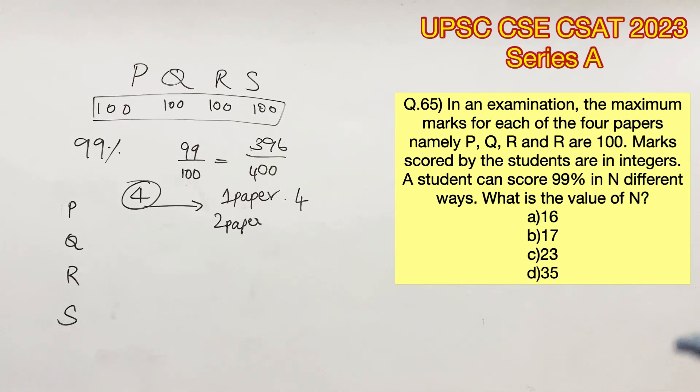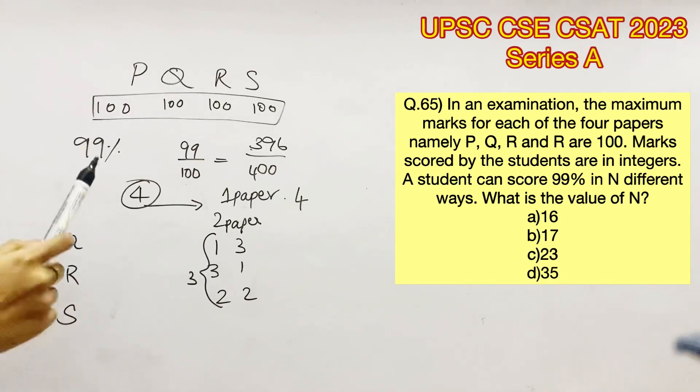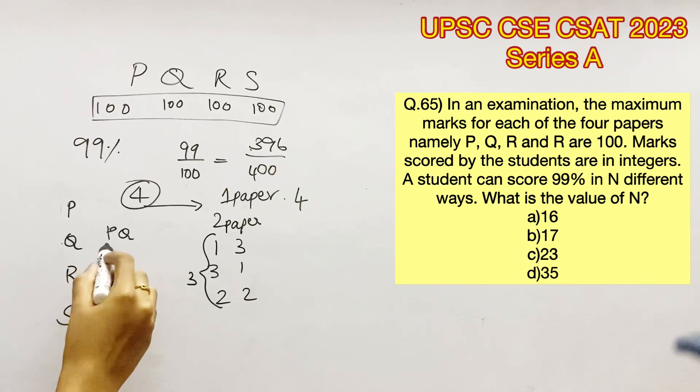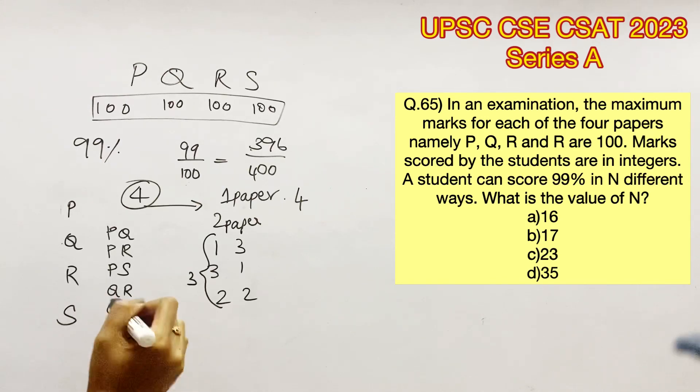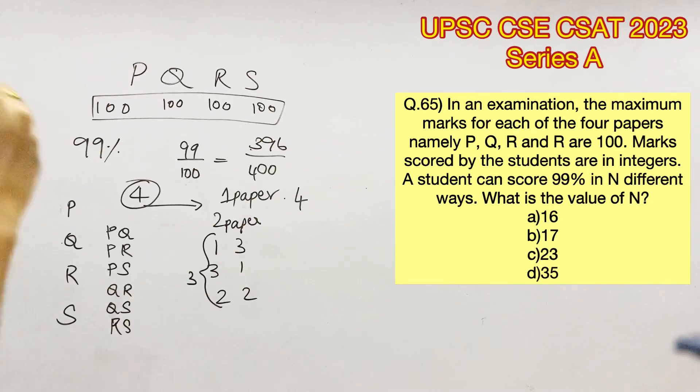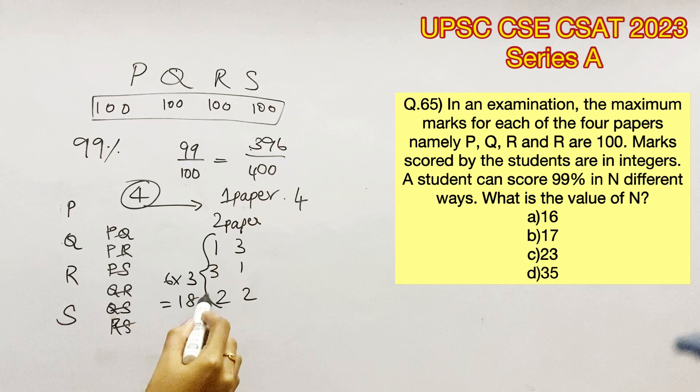Next, if he loses the four marks in two papers, he can either lose one mark in the first paper and three marks in the second paper, or three in the first and one in the second, or two marks in both the papers. So there are three ways in which he can lose the marks. Now let's see the number of ways we can pair up two different papers. We can pair up P-Q or P-R or P-S, Q-R or Q-S and R-S. So there are six ways in which we can pair up these papers. Six into three, we get 18 different ways in which he can lose four marks in two papers.